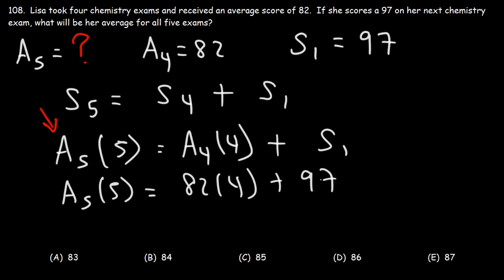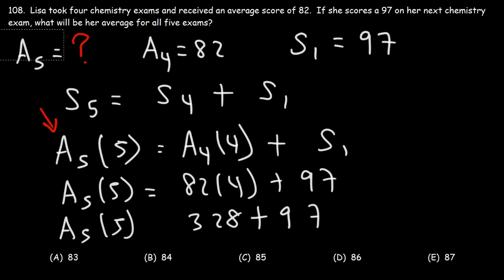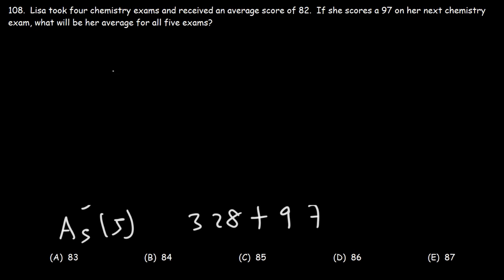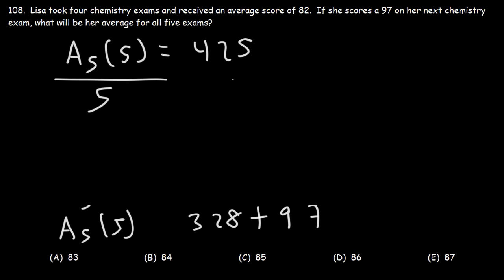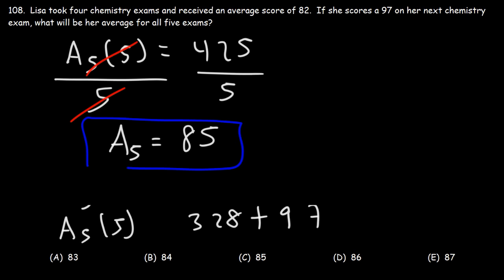82 times 4: 80 times 4 is 320, and 2 times 4 is 8, so that's 328. Adding 97 to 328 gives us 425. Dividing both sides by 5, the average of the five exams is 425 divided by 5, which is 85. That's answer choice C.